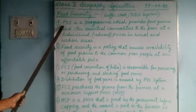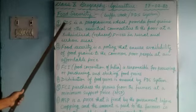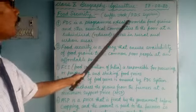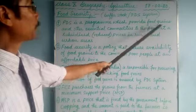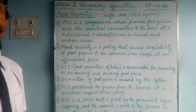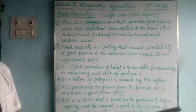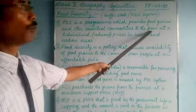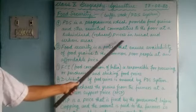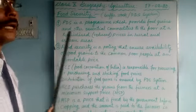The second component of food security is the public distribution system. PDS is a program which provides food grains and other essential commodities to the poor — such as kerosene oil, pulses, sugar, and wheat — at a subsidized rate, meaning reduced prices, in rural and urban areas.